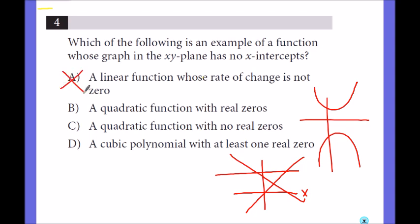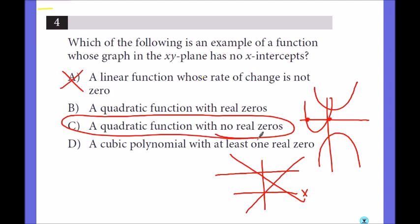B, a quadratic function with real zeros. That means quadratic that goes through zeros with no real solutions. Means you'll get imaginary solutions possibly but it will not have real solutions. So it will never hit the x-axis, so it has to be C. A cubic polynomial with at least one real zero. So that means it will hit 0 at least once. So it has to be C.